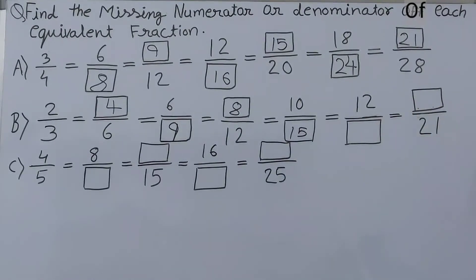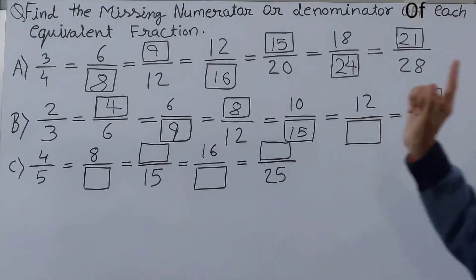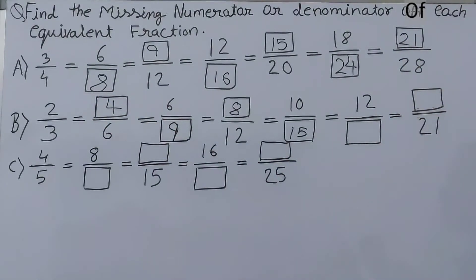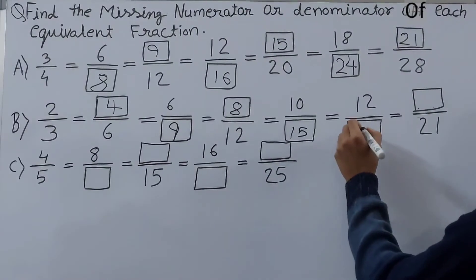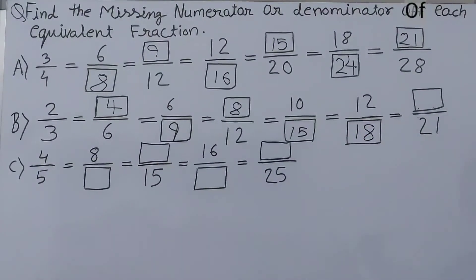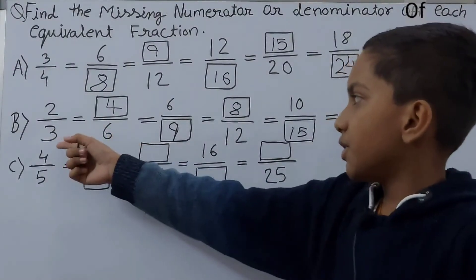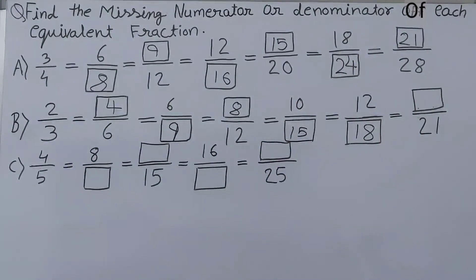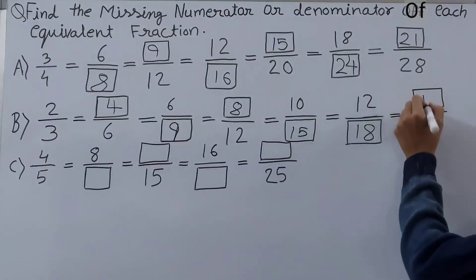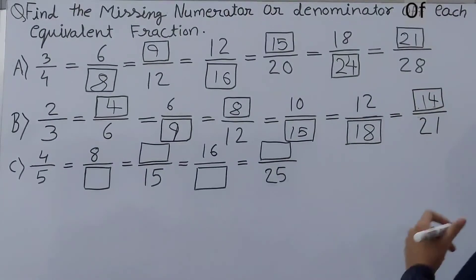Next: 12/□ — we have the numerator 12. 2 times 6 is 12, so 3 times 6 is 18. So 18 goes in the denominator. Next: □/21 — we have the denominator. Our denominator is 3 and here it is 21: 3 times 7 is 21. So 2 times 7 is 14, meaning 14 goes in the numerator.